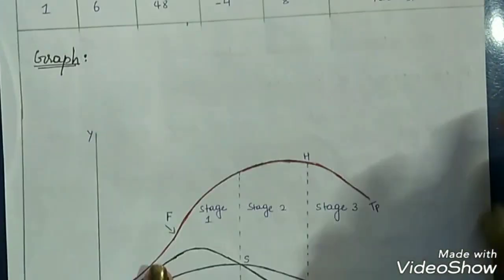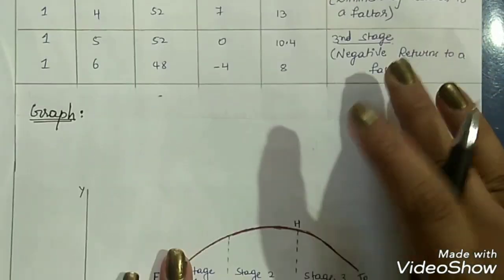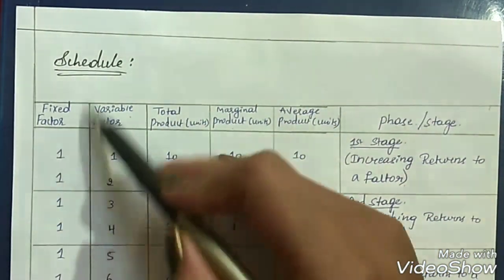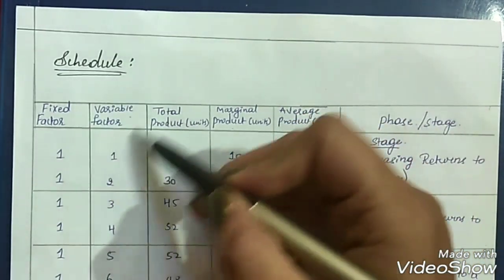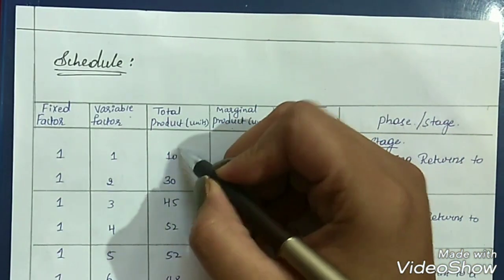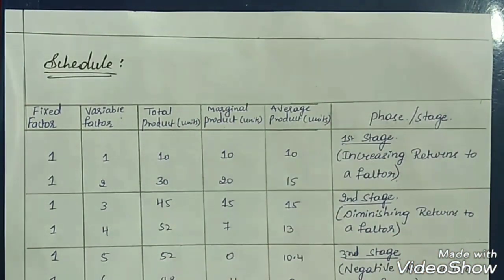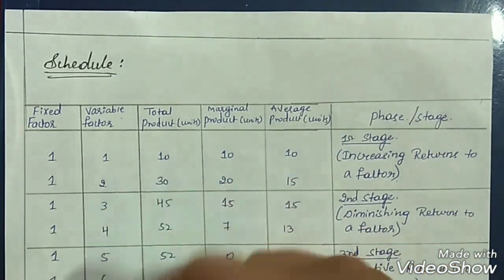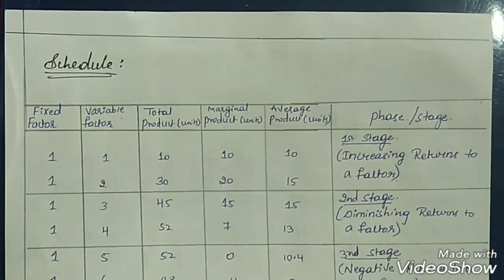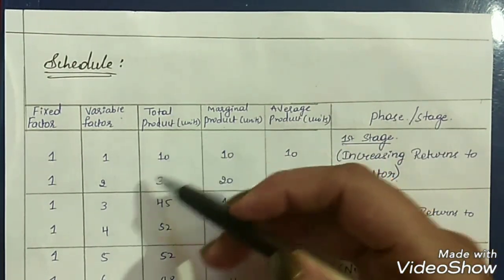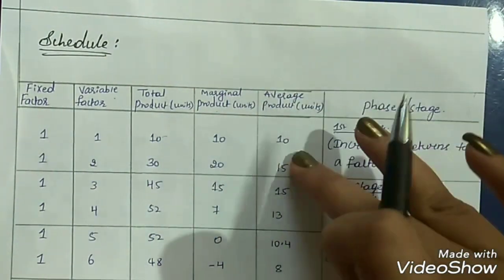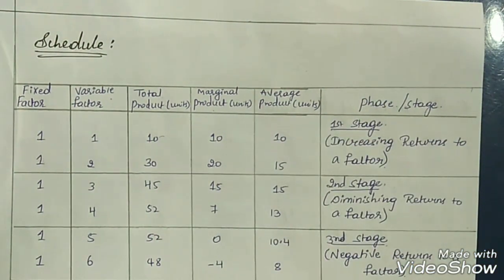Next, we have the schedule and graph of this law. In the schedule, the fixed factor is land and the variable factor is labor. Total product refers to the total output obtained after the production process. Marginal product refers to the output obtained by employing one extra unit of variable factor. Average product is the total product divided by the number of units of input.